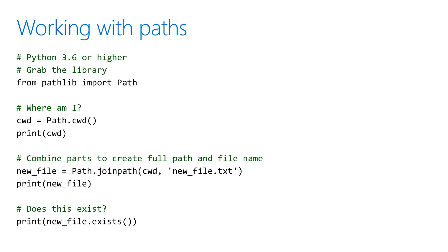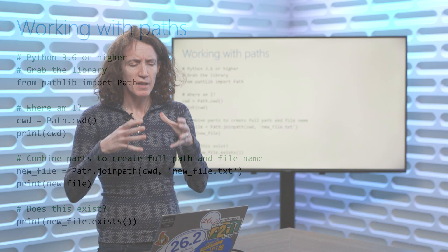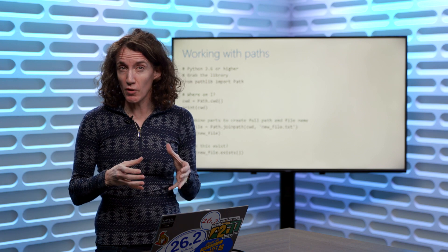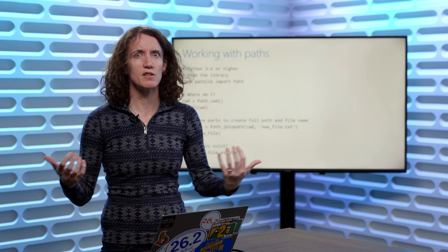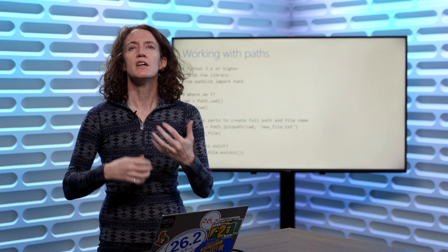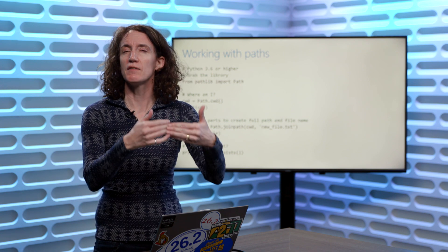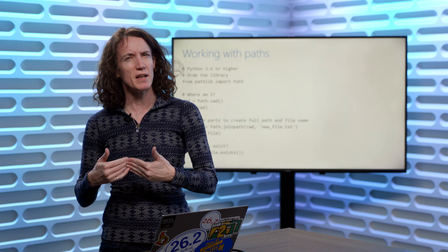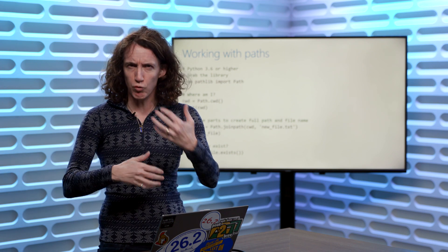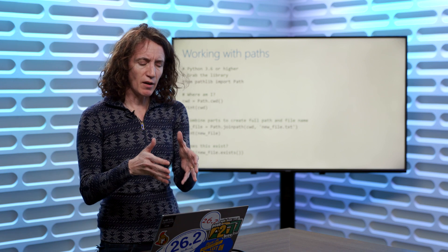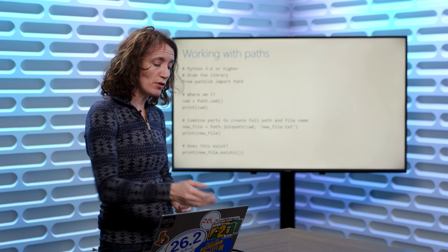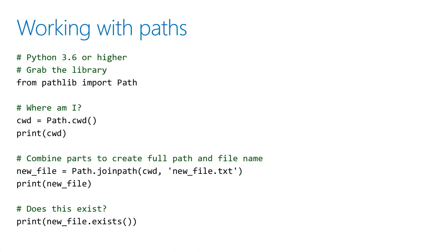Another common task is checking whether a file already exists. Often before we write to or read a file, we want to check if it exists first so we don't just get error messages causing things to crash. It's much more elegant to say let's check if the file exists, and if it doesn't, maybe we return our own error message — so controlled error handling instead of having a function fail.